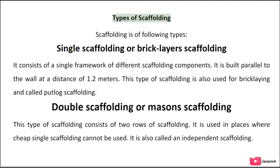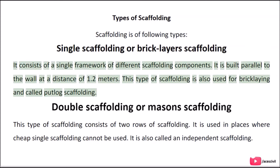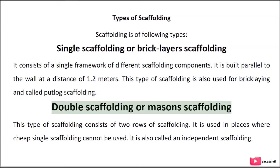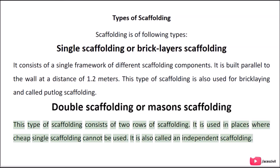Types of scaffolding: Single Scaffolding or Brick Layers Scaffolding consists of a single framework of different scaffolding components. It is built parallel to the wall at a distance of 1.2 meters. This type is also used for bricklaying and is called put log scaffolding. Double Scaffolding or Mason's Scaffolding consists of two rows of scaffolding. It is used in places where single scaffolding cannot be used and is also called independent scaffolding.